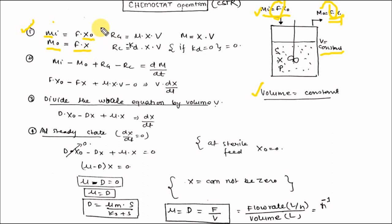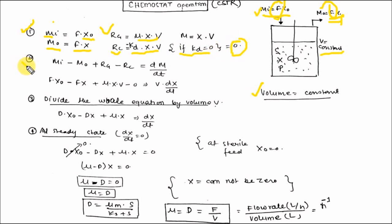Rate of generation (RG) equals μ times X times V. Rate of consumption (RC) equals K_D times X times V. If K_D equals zero, then RC equals zero. Using the mass balance equation with these values gives: F·X_naught minus F·X plus μ·X·V equals V·(dX/dt).